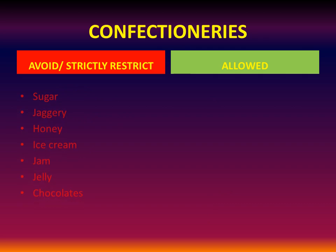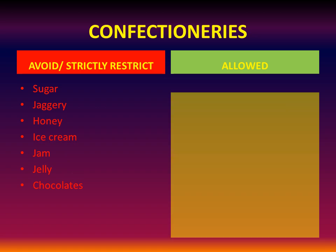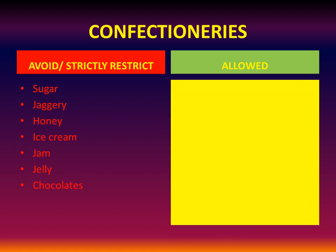Confectionaries: sugar, jaggery, honey, ice cream, jam, jelly, and chocolates are not to be taken or strictly restricted. In fact, confectionaries have to be totally avoided by diabetics — there is nothing allowed in this category.